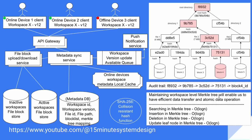The good part is that searching, insertion, deletion, and update of a leaf node in a Merkle tree requires only O(log n). So this is going to be a performance improvement as well. For hashing purposes, we might want to use a collision-resistant hash function, for example SHA-256.